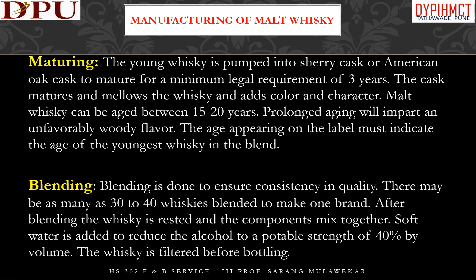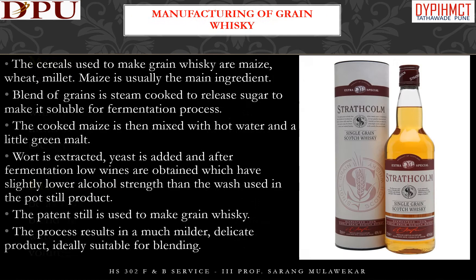Malt whiskey can be aged between 15 to 20 years. Prolonged aging will impart an unfavorably woody flavor. The age appearing on the label must indicate the age of the youngest whiskey in the blend. After maturation, whiskey is blended to ensure consistency in quality. There may be as many as 30 to 40 whiskeys blended together to make one brand. Soft water is added to reduce the alcohol to a potable strength of 40% by volume, and the whiskey is filtered before bottling.